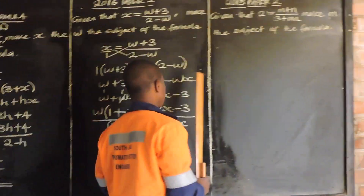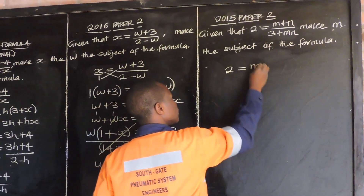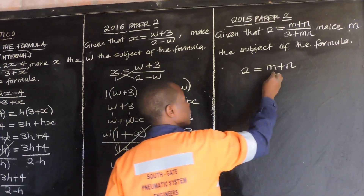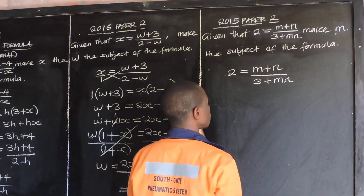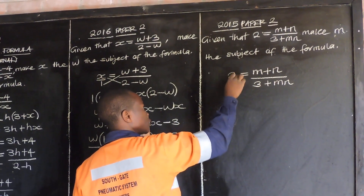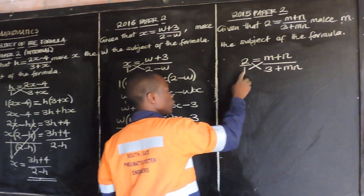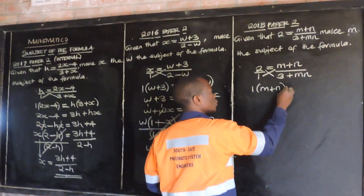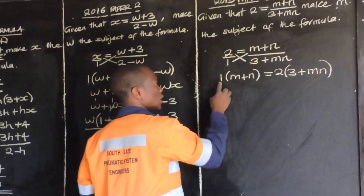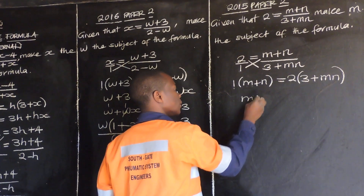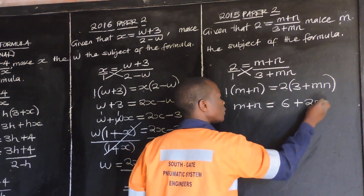Let's look at the last question, which is 2015 paper 2. It is saying given that z is equal to m plus n over 3 plus mn. Then we are told to make m the subject of the formula. So z is our current subject. Step 1: write over 1 to balance, then cross multiply and say 1 multiplied by m plus n, close, is equal to z multiplied by 3 plus mn. So 1 times m plus n gives m plus n, is equal to z times 3 gives 6, plus z times mn gives 2mn.